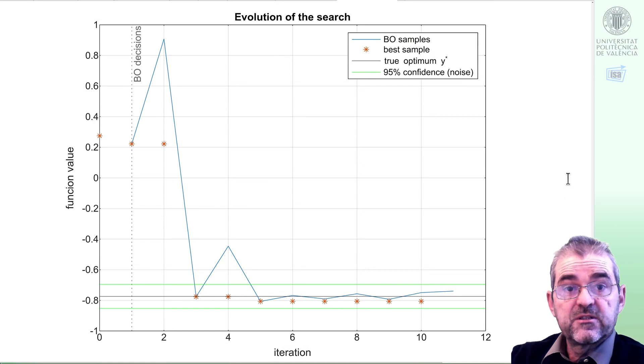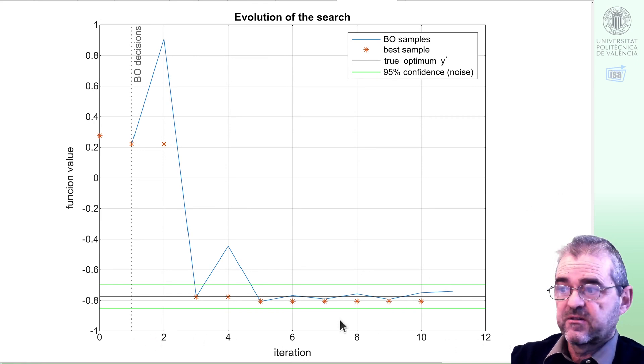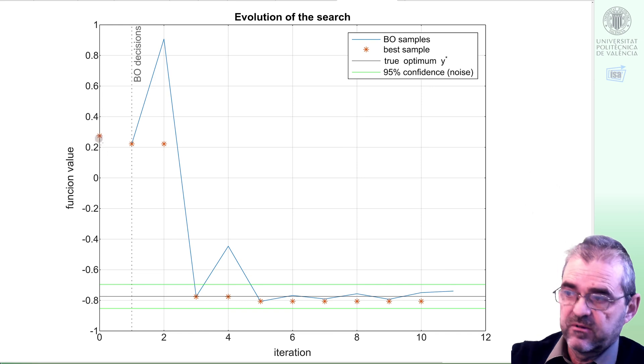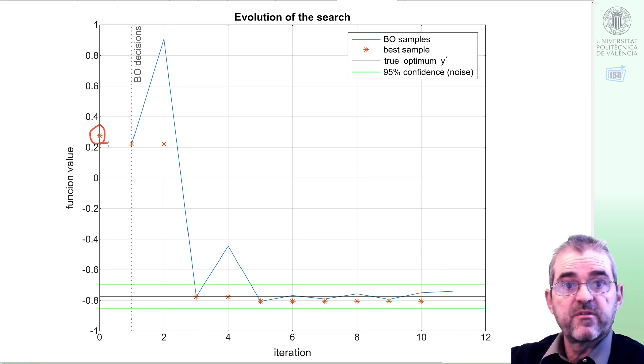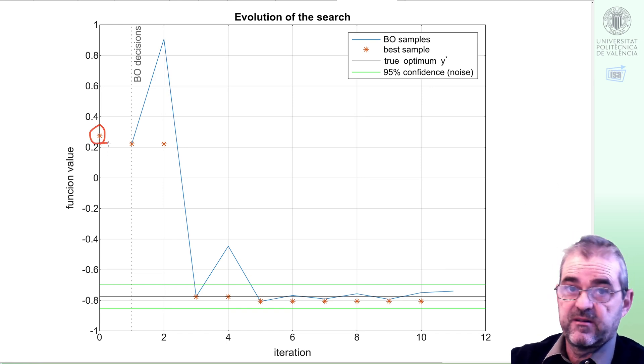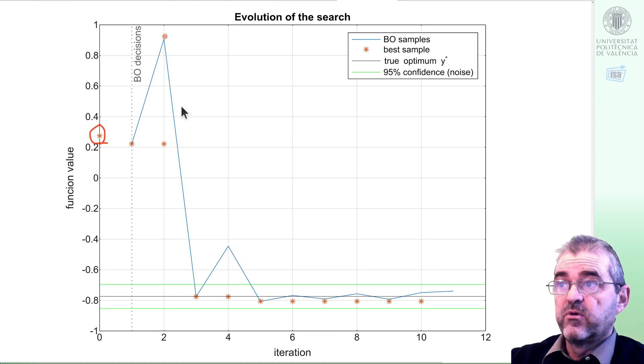If we now plot the evolution of the search for the optimum, in this plot, we have the iteration number in the abscisse axis. We have the first sample, sample zero, out of the Bayesian optimization algorithm. And then, from one onwards, they have Bayesian optimization decisions. So the blue line are the function values that Bayesian optimization is obtained. And the red star is the best sample in the historical record.